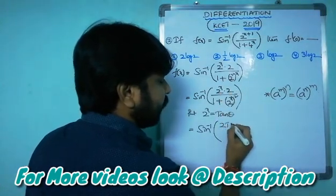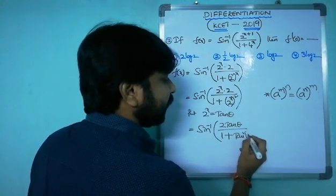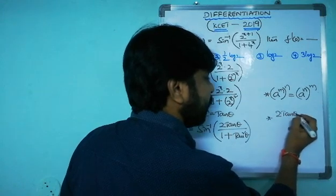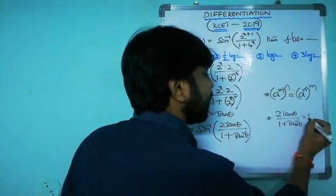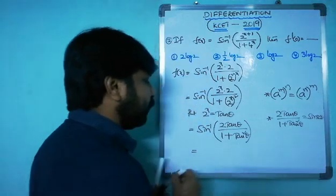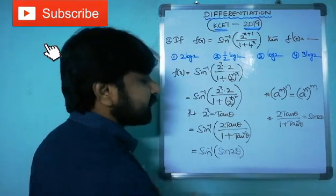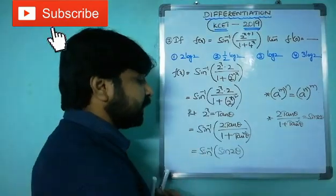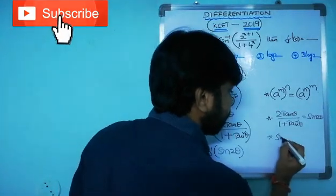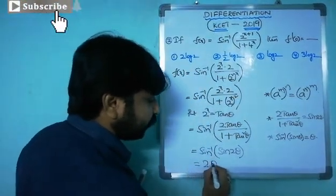Using the identity 2·tan θ / (1 + tan²θ) = sin 2θ, we get f(x) = sin⁻¹(sin 2θ). And since sin⁻¹(sin 2θ) = 2θ, the function simplifies to f(x) = 2θ.